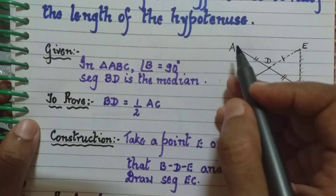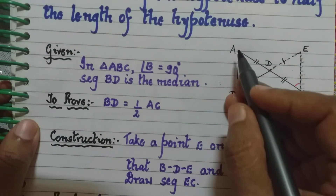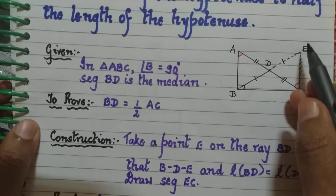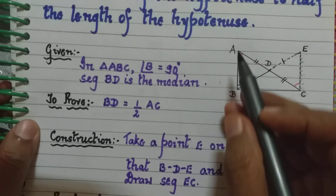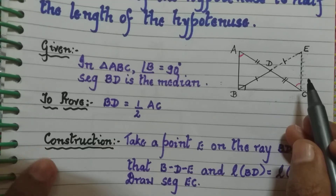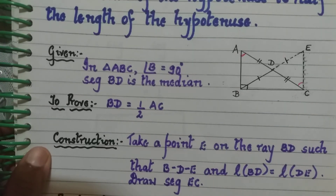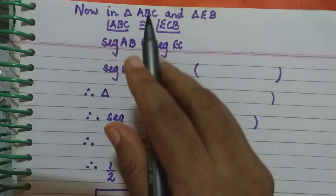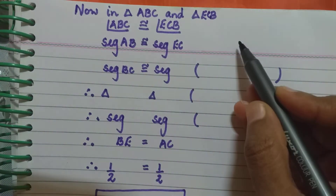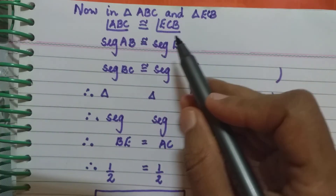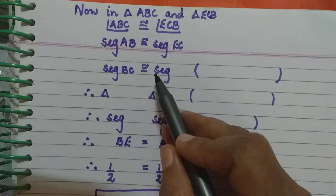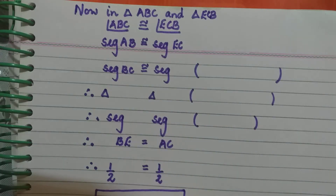Now we consider triangle ABC and triangle ECB. We have angle ABC congruent to angle ECB. We also have segment AB congruent to segment EC by CSCT. And segment BC is common to both triangles, so segment BC is congruent to segment BC.